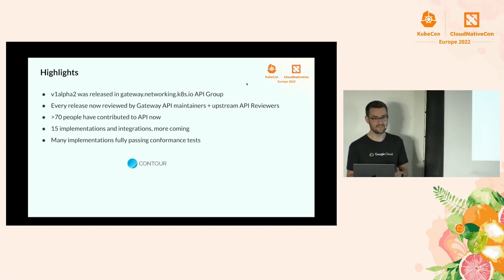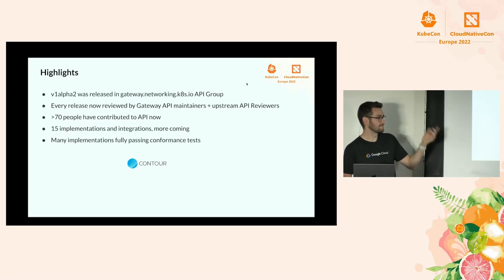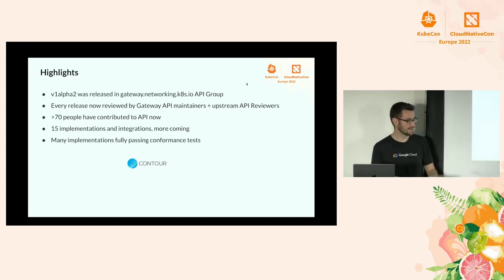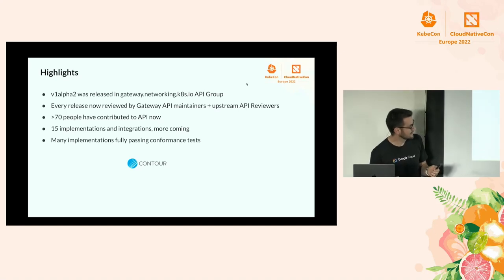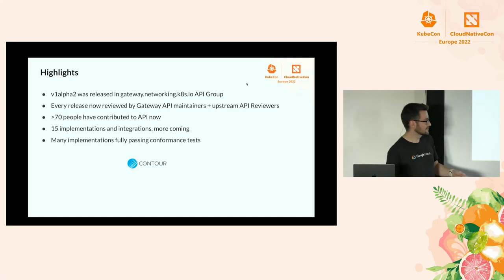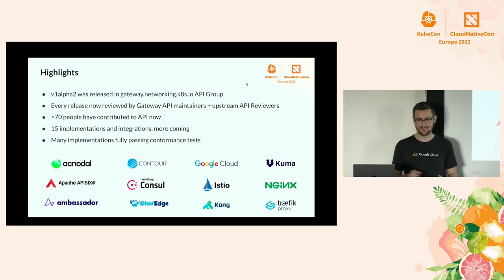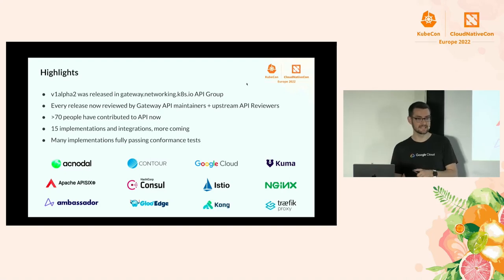We have more than 70 people who have already contributed to this API, and that number keeps going up. We always need more contributors and maintainers. Right now we have around 15 implementations — Envoy Gateway was announced here at KubeCon and is based on Gateway API. We already have conformance tests in place, and many implementations are fully passing them, which means a pretty consistent experience across implementations.